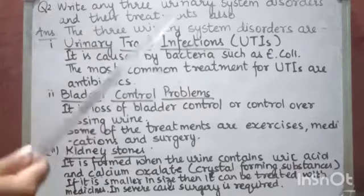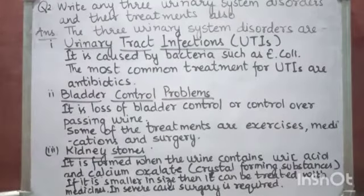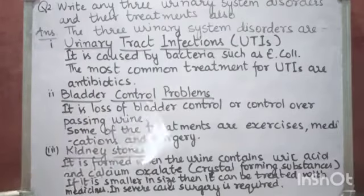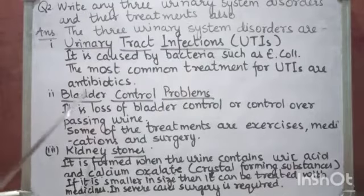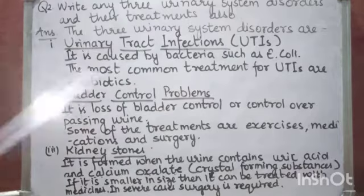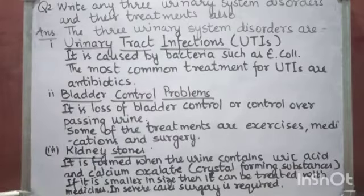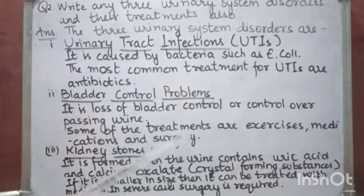Urinary tract infections, or UTIs, are infections related to the urinary tract. They are caused by bacteria such as E. coli, and the most common treatment for UTIs is antibiotics — that means it can be treated through medications. The second one is bladder control problems — a problem where the person loses control over passing urine. Some treatments are exercises, medications, and in severe cases, surgery.